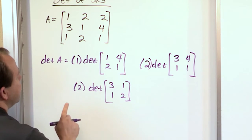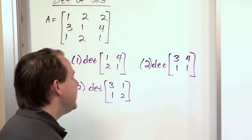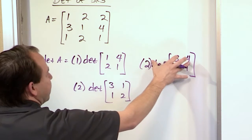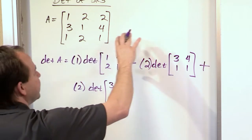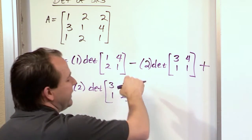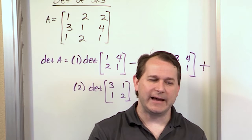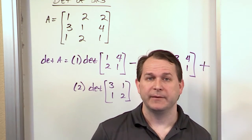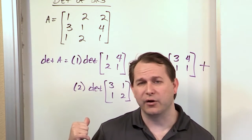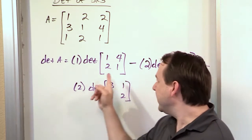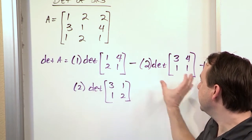Now you have to figure out the signs to place in front of each term. The only thing in this method you really must remember — or you'll get it wrong — is that for the middle element you place a minus sign. So the pattern is: plus for the first determinant, minus for the second, and plus for the third. This negative sign actually comes from the broader general procedure I'll teach you fully later, but for now just remember: always put a negative sign for the second term when expanding about the first row.